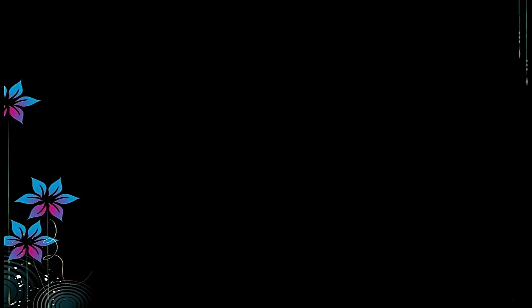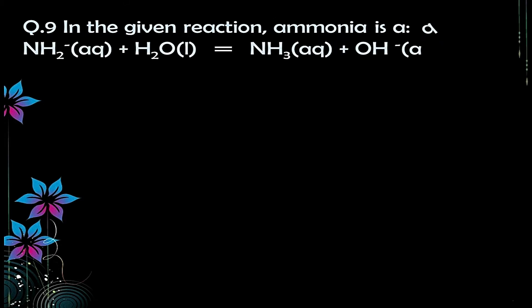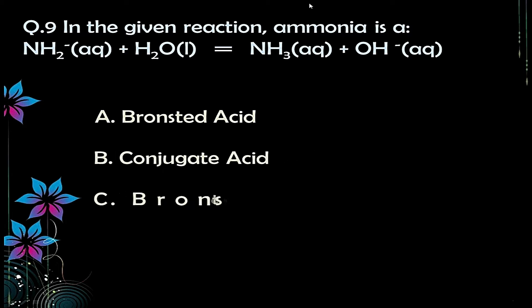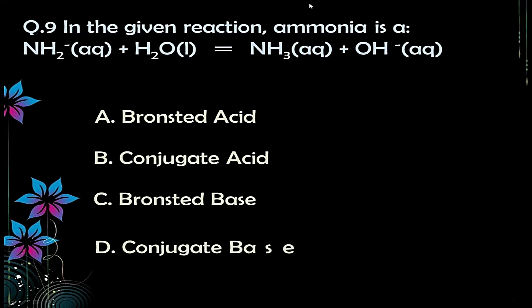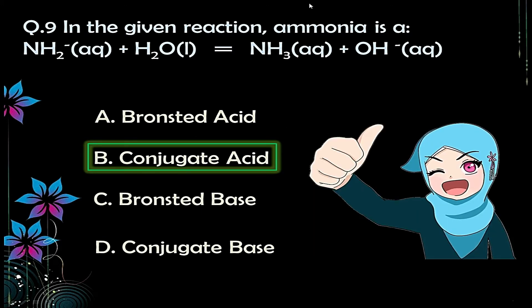Question number nine: in the given reaction — NH₂⁻ + H₂O ⇌ NH₃ + OH⁻ — you have to identify what NH₃ is in this reaction. Options: A) Brønsted acid, B) conjugate acid, C) Brønsted base, D) conjugate base. If you have seen my video on acid-base theories, you can easily answer this. The correct answer is option B — conjugate acid.